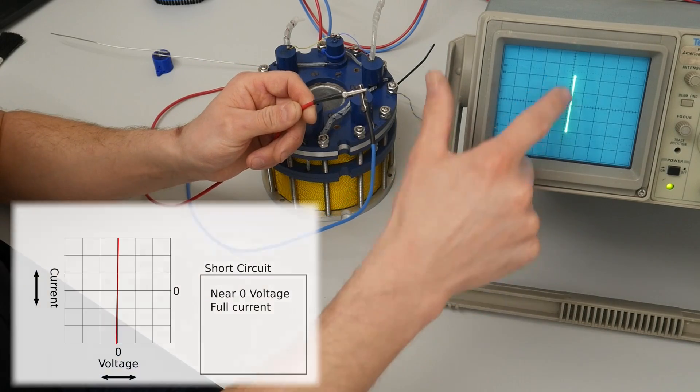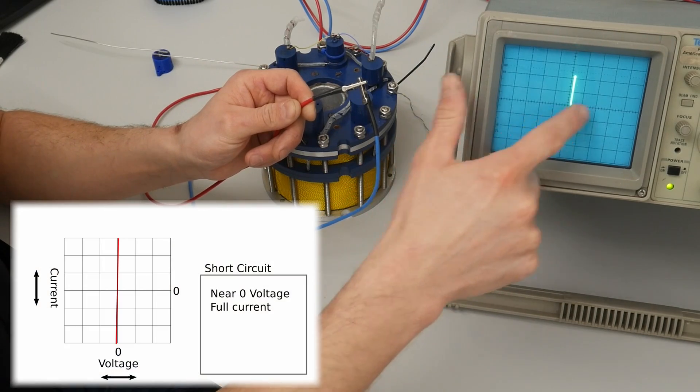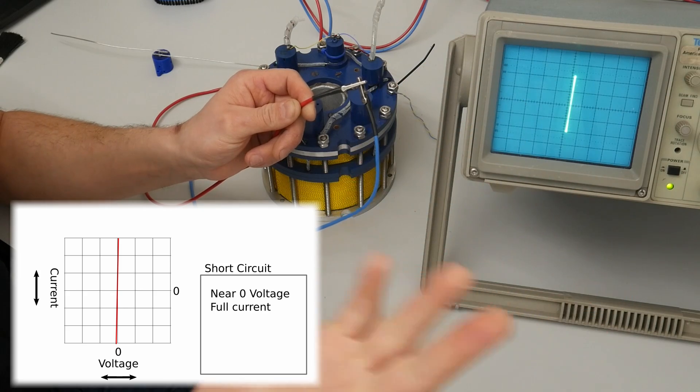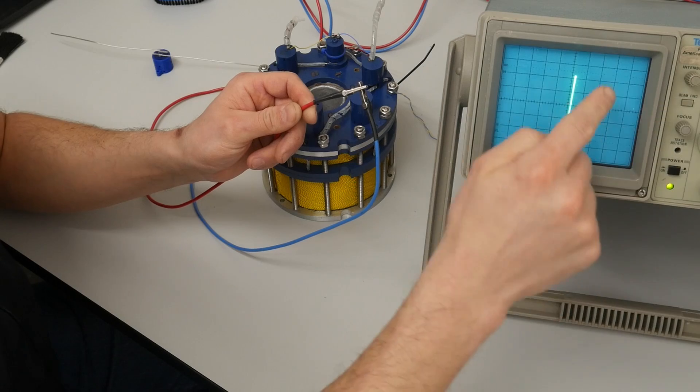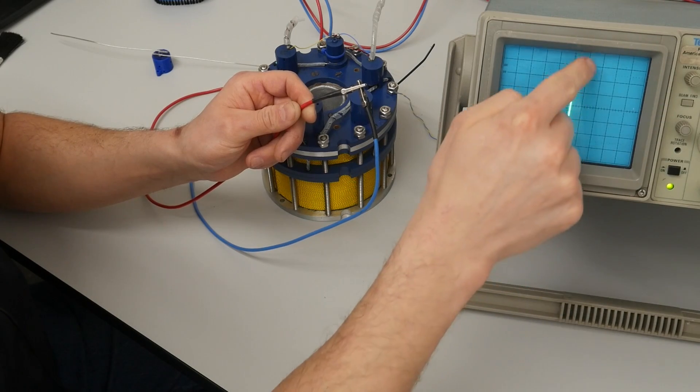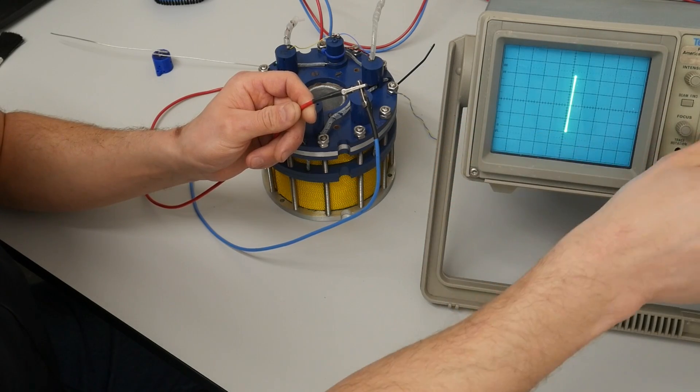So right here I have a shorted connection. We see we have current deflecting immediately without any change in voltage because it's a short. If we were to try to stretch that out very wide, we would see it very slightly showing some deflection left and right, but the voltage is so low it's going to be hard to see.